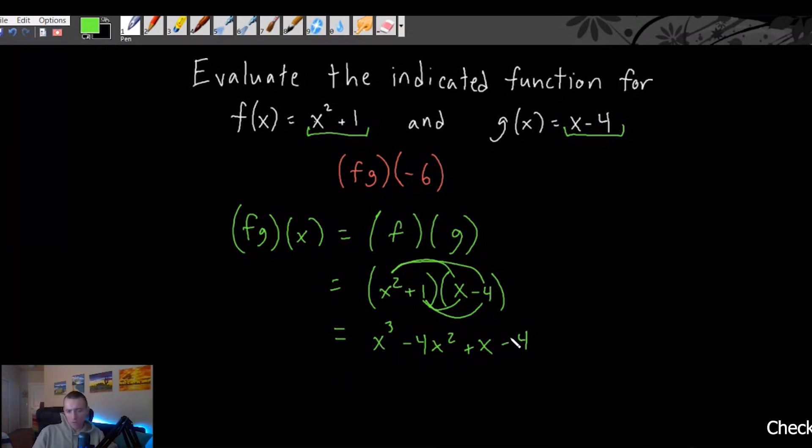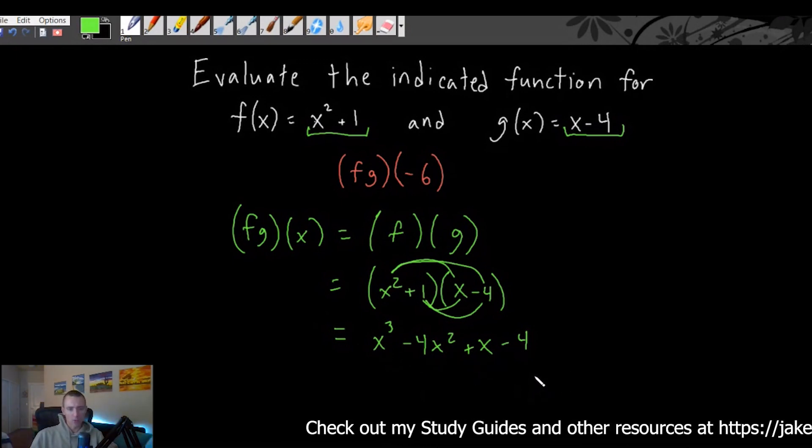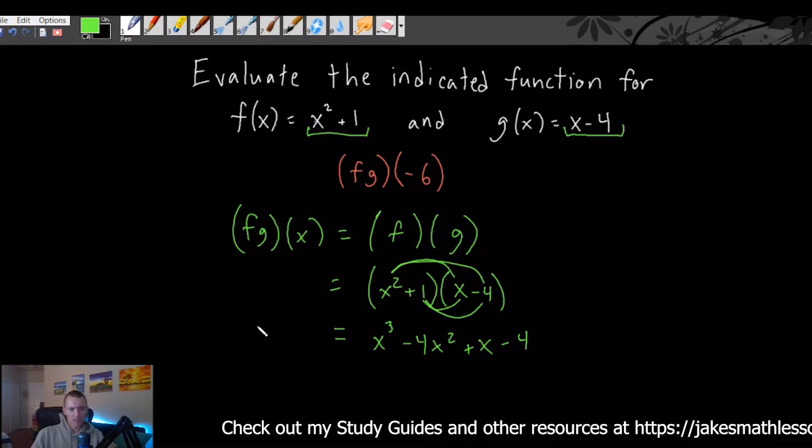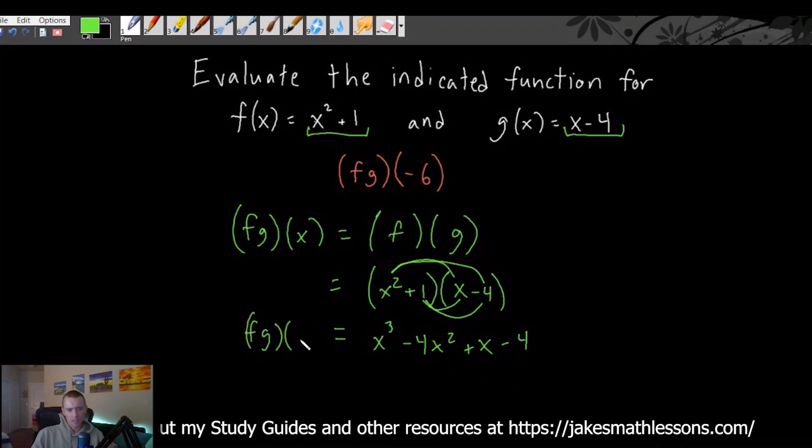But yeah. So from here, you would want to try and simplify this from this point if you can. In this case, there's not really any simplifying we can do because there's no like terms that we can combine here at this point. So this is basically as simple as f times g of x is going to get.